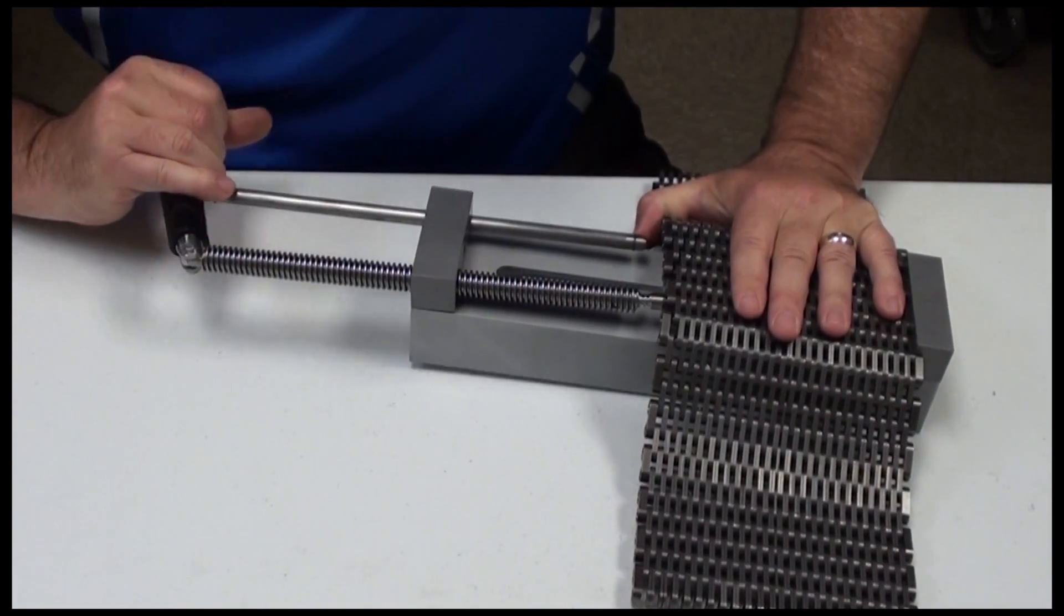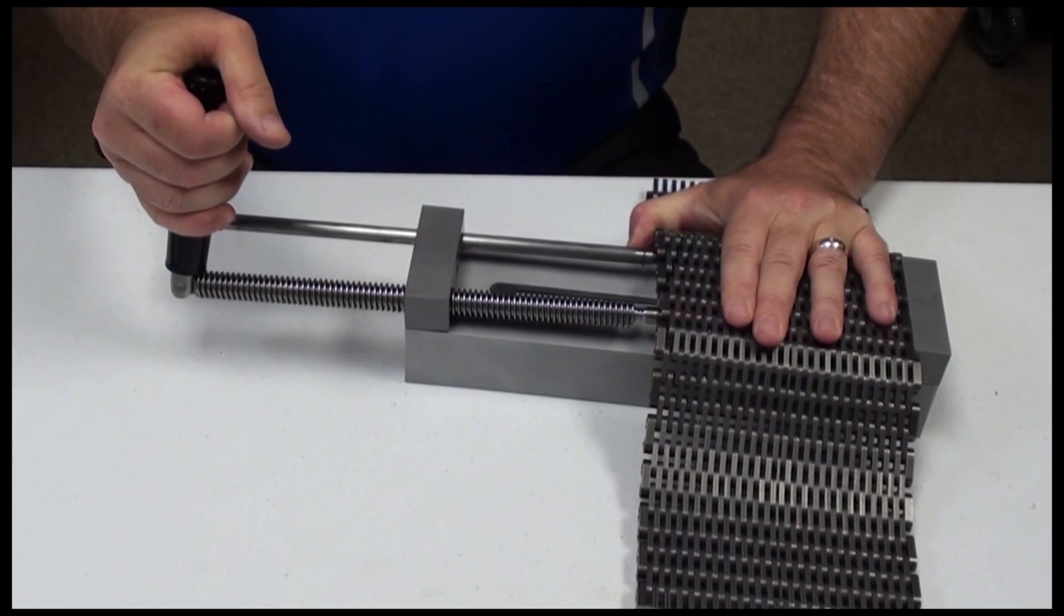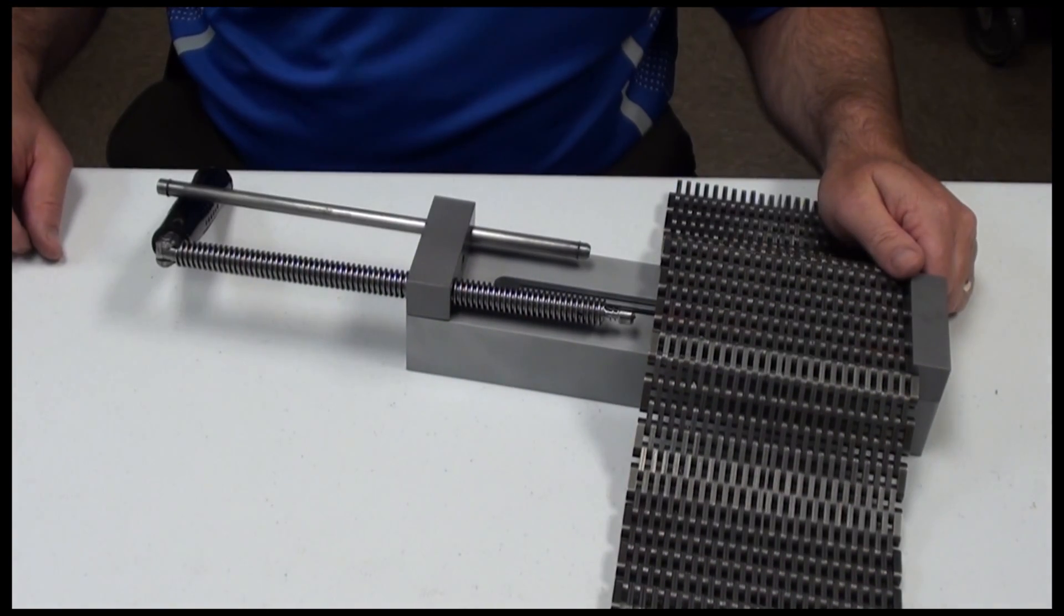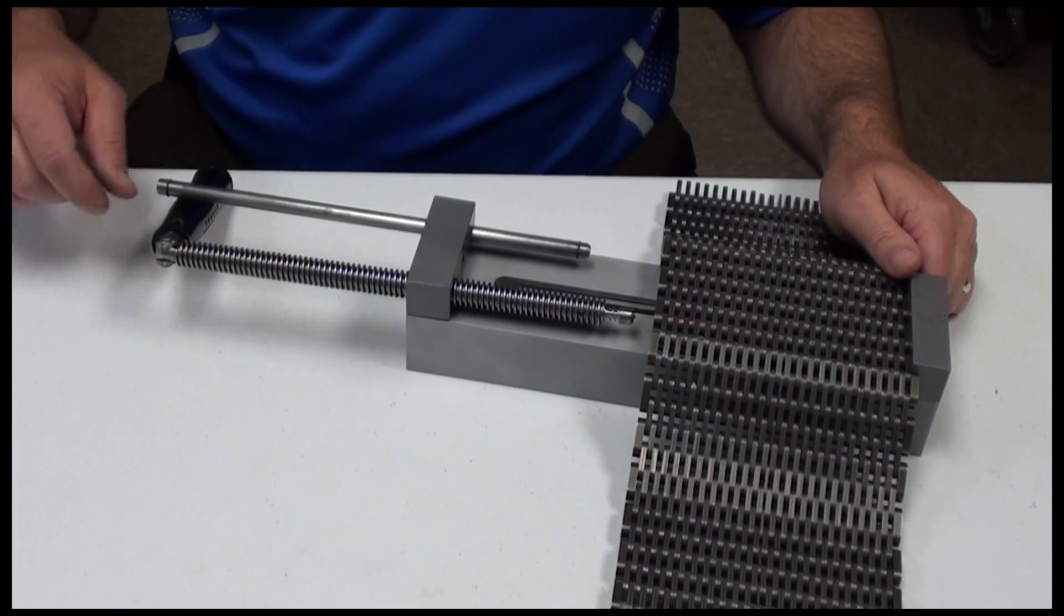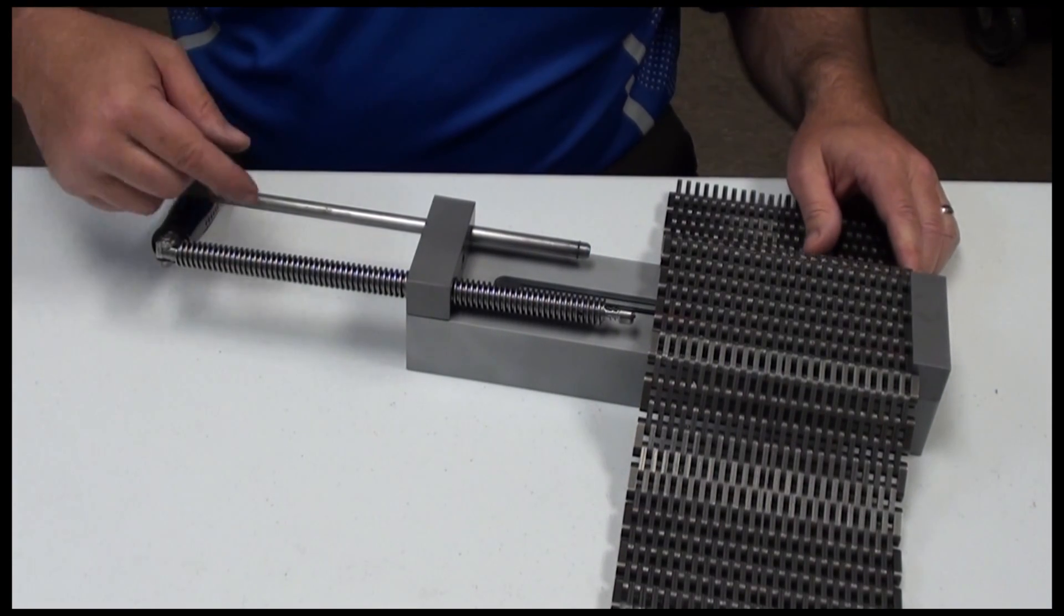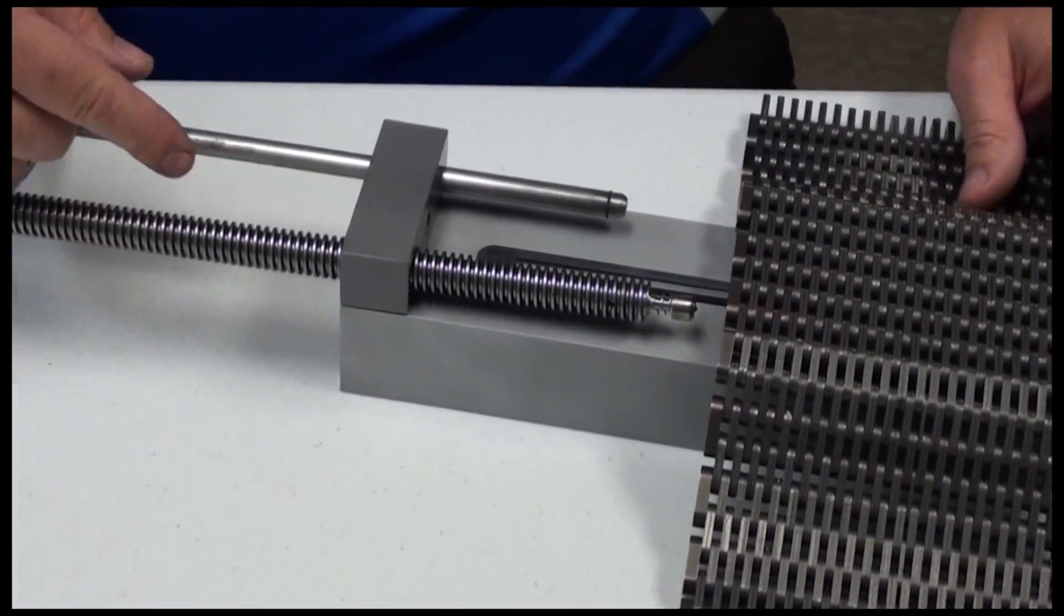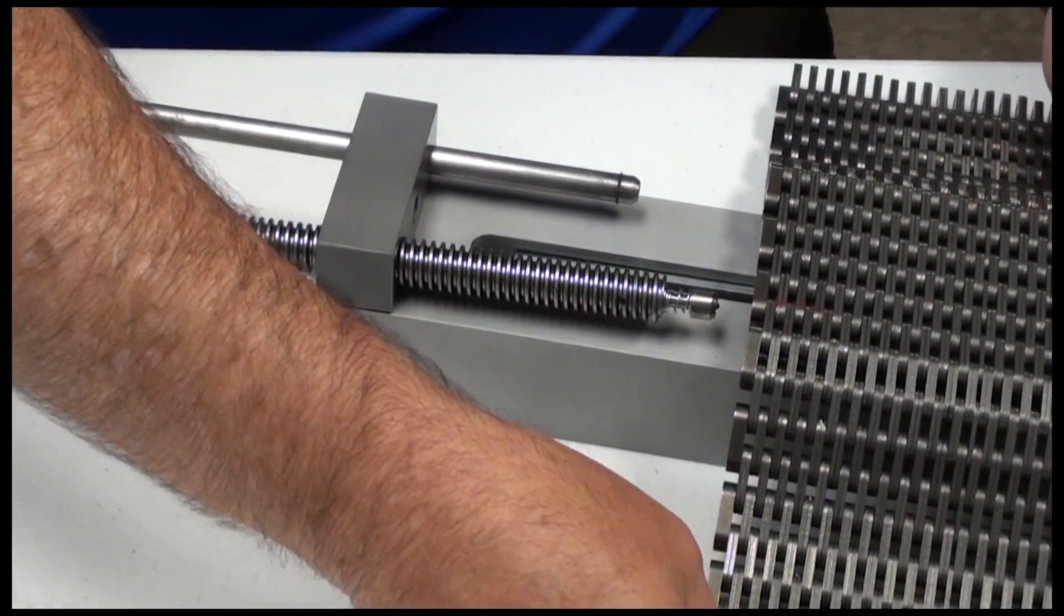Now look back at the RKO tool and locate the hole on the front block that is centered between the two rods. Move the RKO tool under the chain so that the pin being removed lines up with this hole.